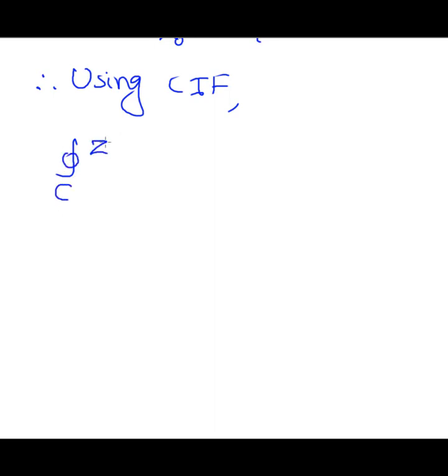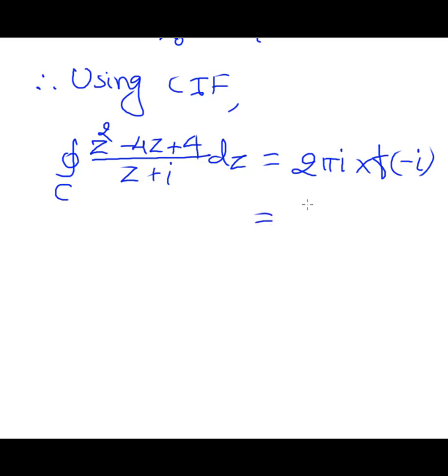(z²-4z+4)/(z+i) dz equals 2πi times F evaluated at that singularity -i. That means 2πi times (3+4i), and that is π(-8+6i). This is the answer.